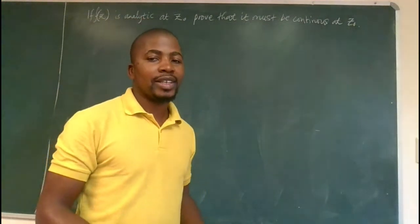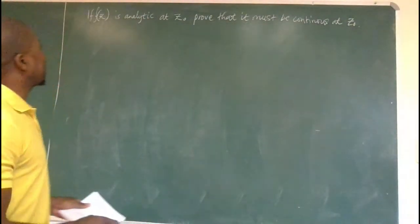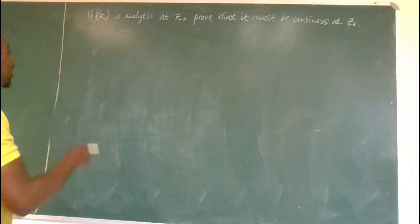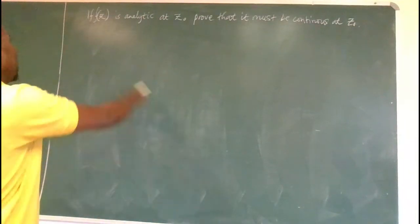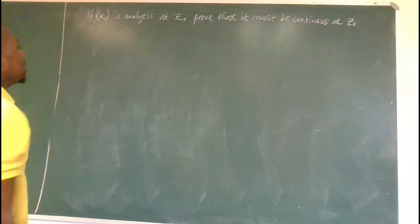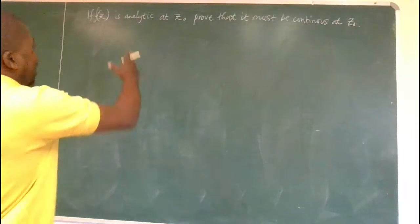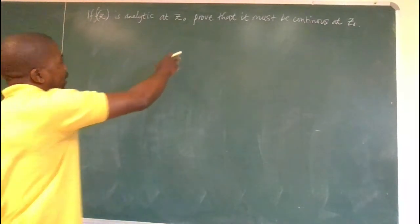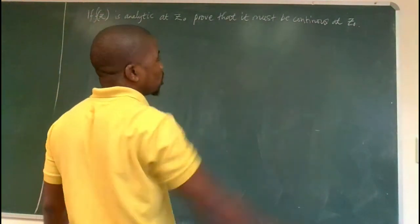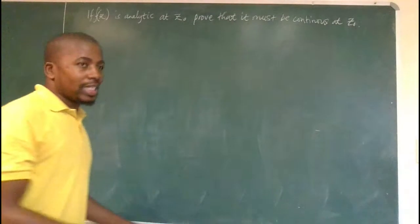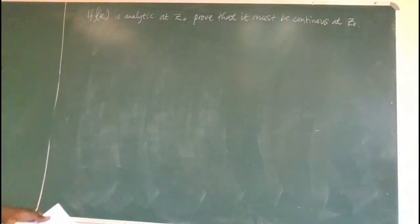Hello, once again, welcome. So, we have this other question here. We are told that if f of z, if its second function is analytic at some point z0, prove that it must be continuous at z0.